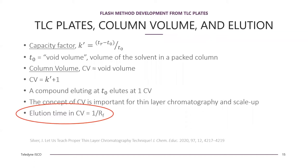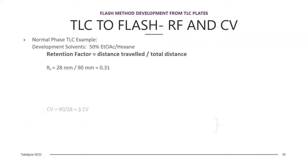The important equation is that the elution time in an isocratic run expressed in column volumes equals one over the retention factor: CV = 1/RF. Mathematically equivalent, the column volume equals the solvent front distance divided by the distance the spot moved.